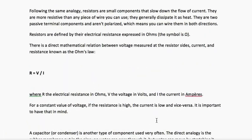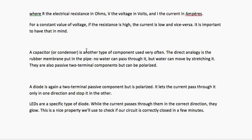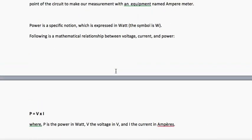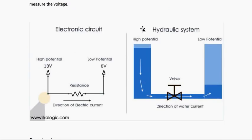The next is capacitance. Capacitors are another type of component used very often. The direct analogy is a rubber membrane put in the pipe. Capacitors are devices that store current. If you connect a rubber valve here, it won't allow the water to flow — it stores the water. That storage of water represents capacitance.